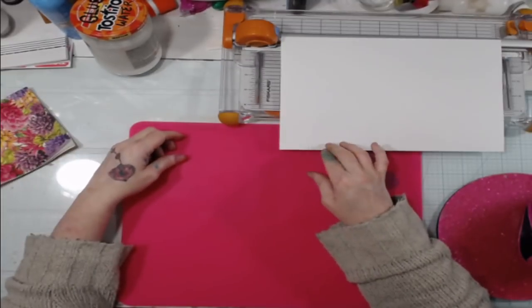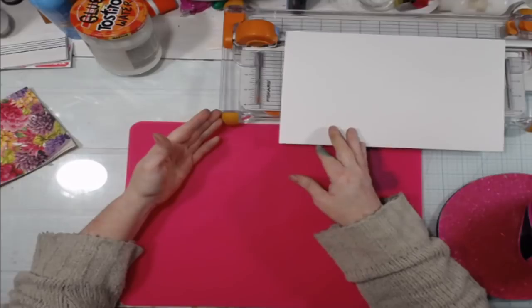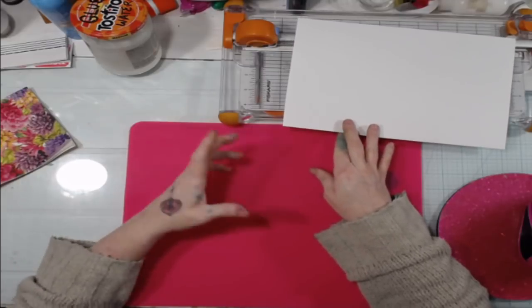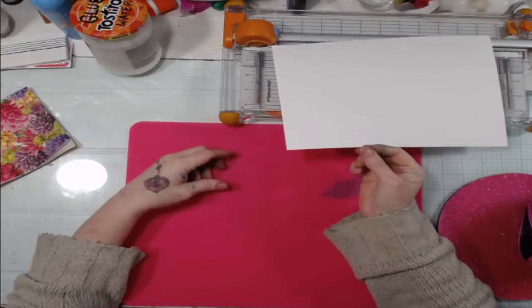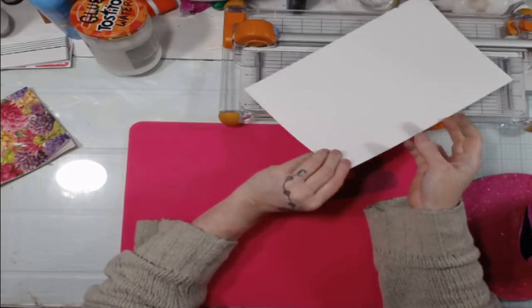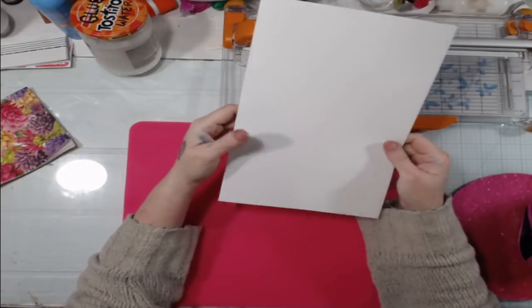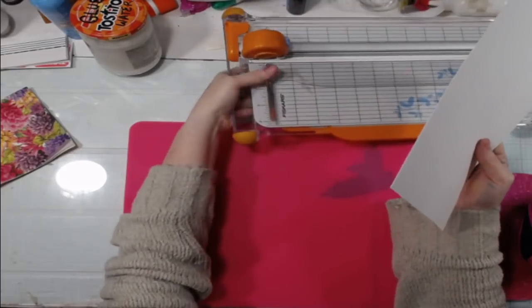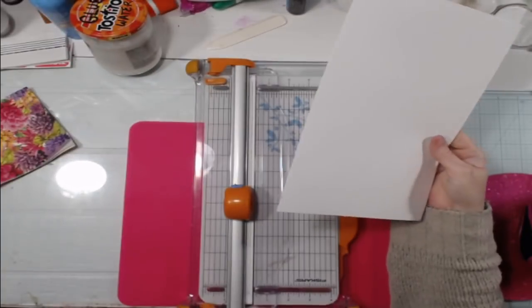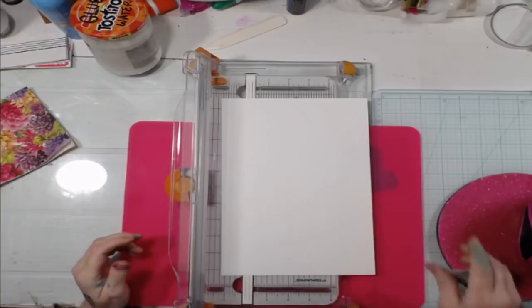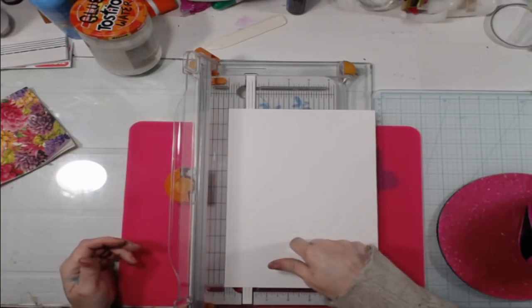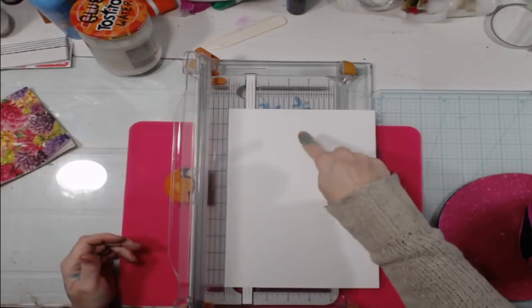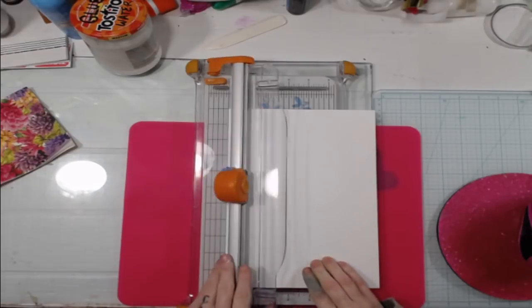All you need is some paper, some sort of paper cutter or scissors or a way to cut paper to a certain size, and a hole punch. That's all you need. So what you do is take a piece of paper. This is a little lighter than cardstock, but I'm going to use it because I have it.